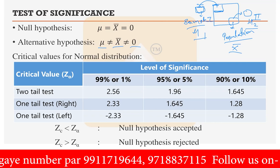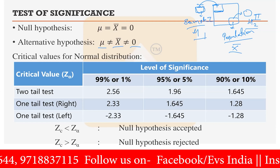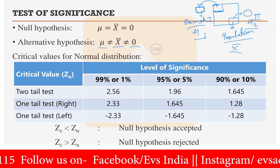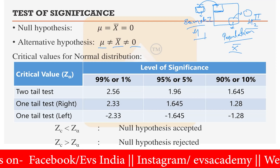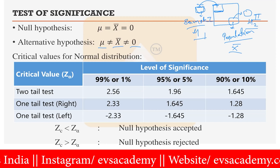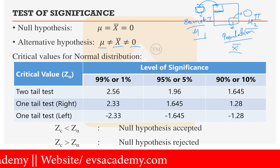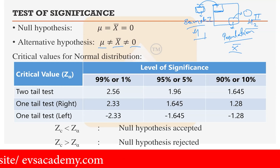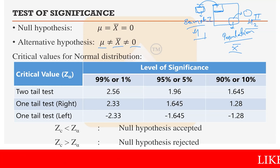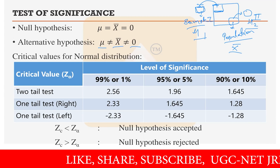Whenever you are using test of significance, you have to write down two hypotheses. One is called the null hypothesis, in which we assume that this particular sample is part of the population, or both samples are part of the single population. In the alternative hypothesis, which is always the opposite of the null hypothesis, we assume that this particular sample is not part of the population, or both samples are not part of a single population.